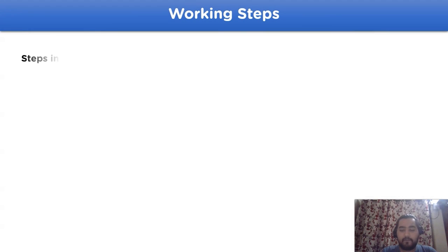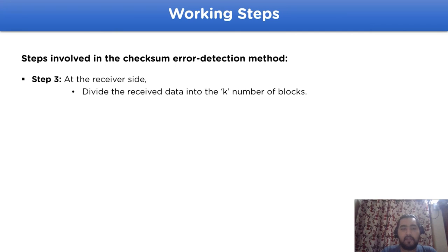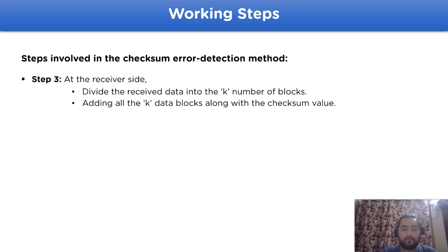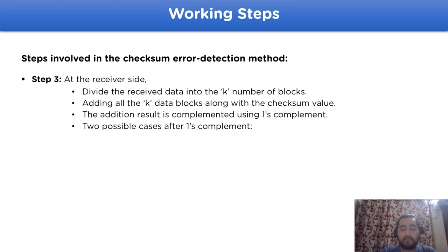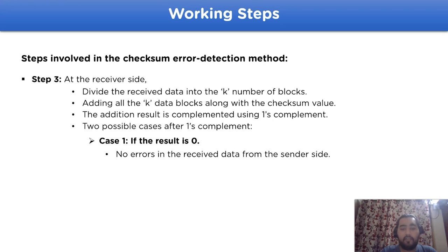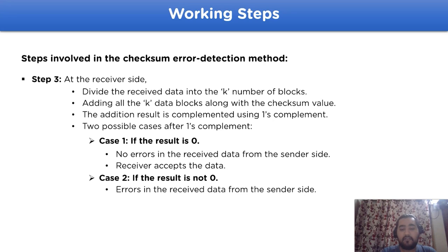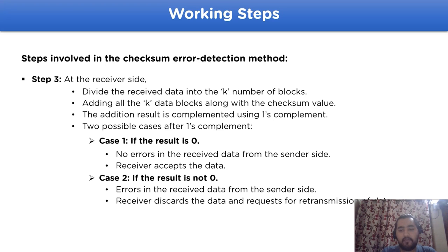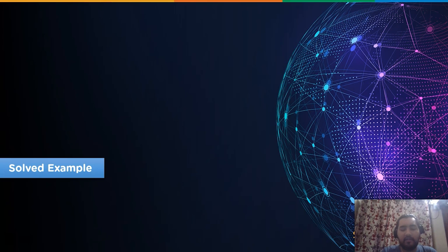Step three begins at the receiver side. The receiver will divide the obtained original data plus the checksum value into k blocks, then add all the k blocks using addition. After that, we complement the obtained data. If the complement comes out to be zero, no errors are present and the receiver accepts the data. If the result is not zero, the received data is damaged and the receiver discards it, requesting retransmission from the sender side.